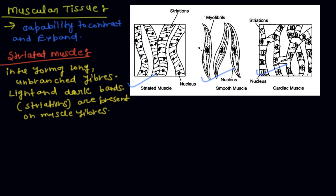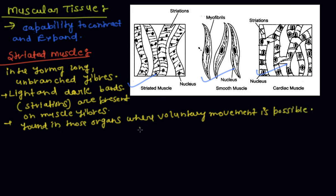Striated muscles are found in those organs where voluntary movement is possible, such as hands, legs, back, and neck.